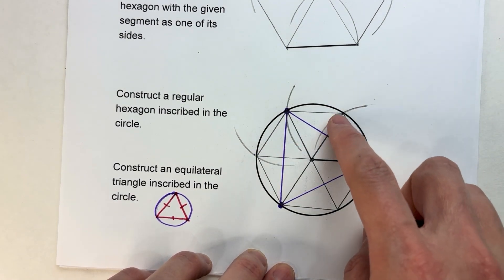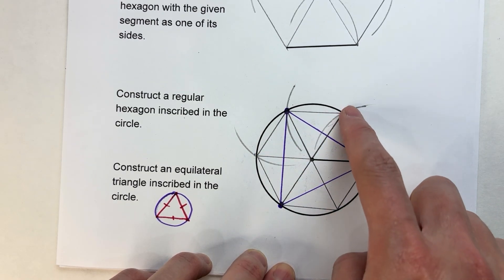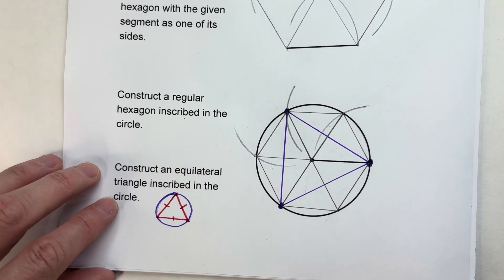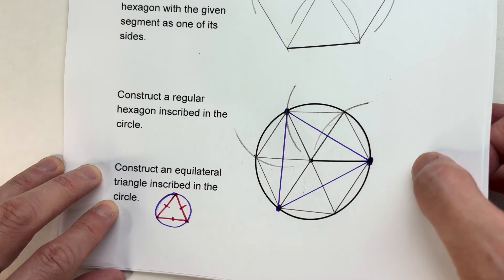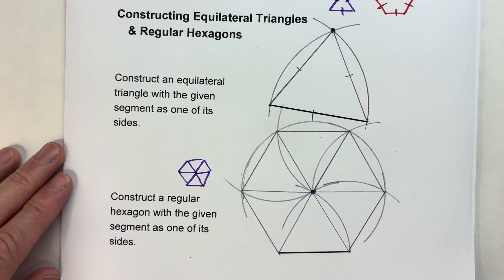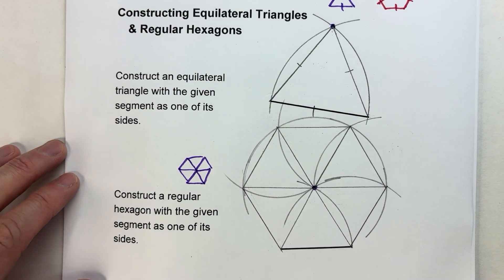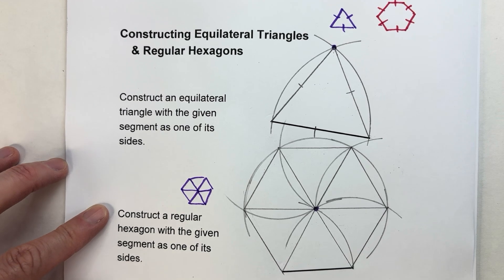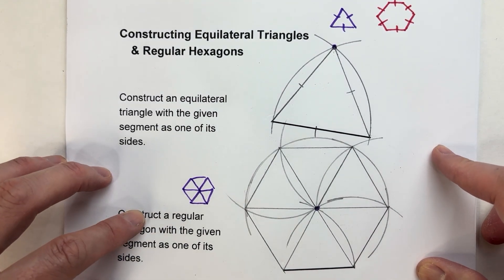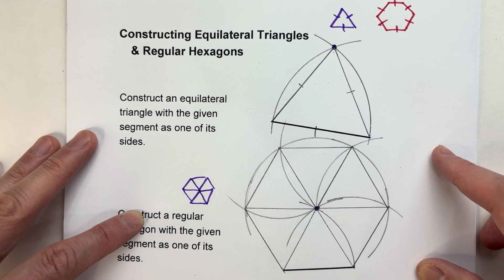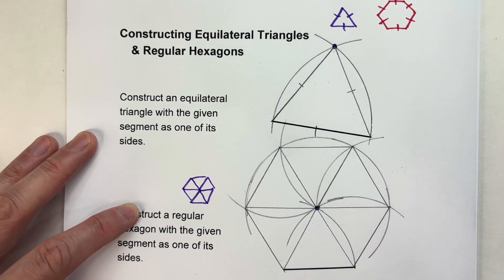Notice we could have picked any three points. We could have picked this one, this one, and this one also. So that's constructing equilateral triangles and hexagons. Hopefully you found this video helpful. If you did, please hit that like button. Also subscribe because it really helps us out. But with that being said, good luck on your math and I will see you next time.